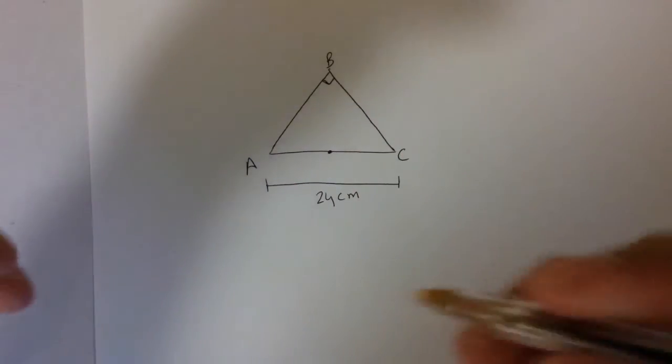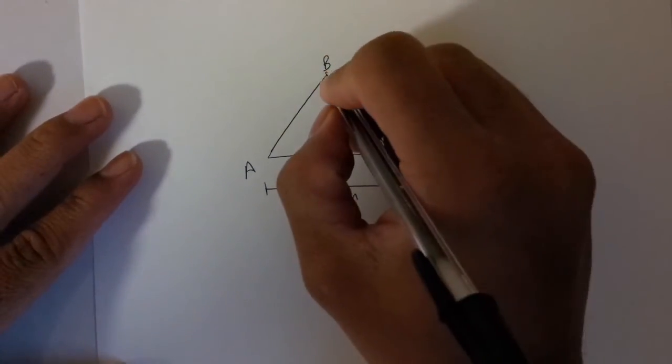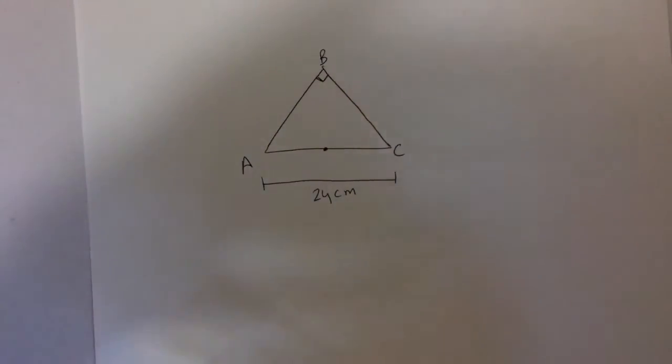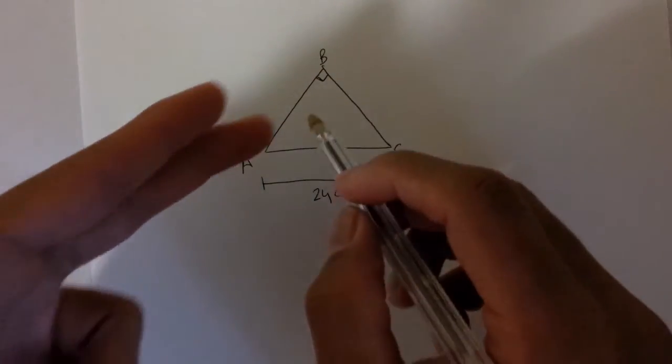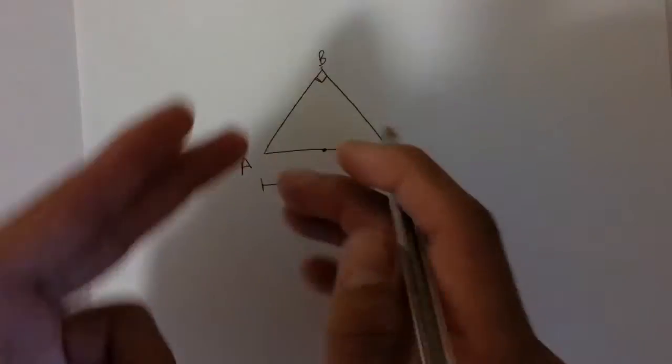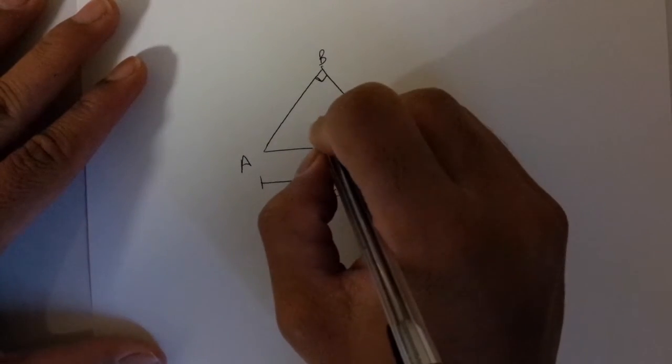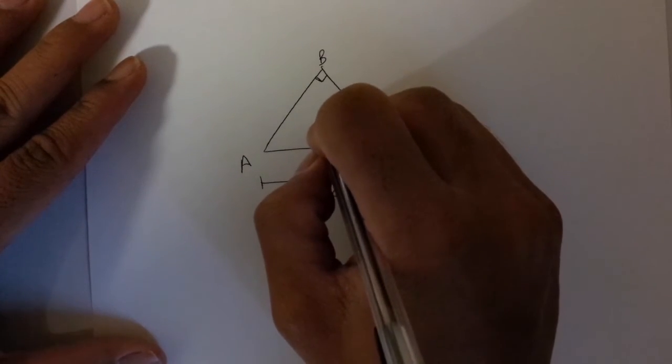And what they're asking is to find the speed at which the center of mass of this lamina is rotating about the midpoint. Let's assume the center of mass is going to be somewhere here.